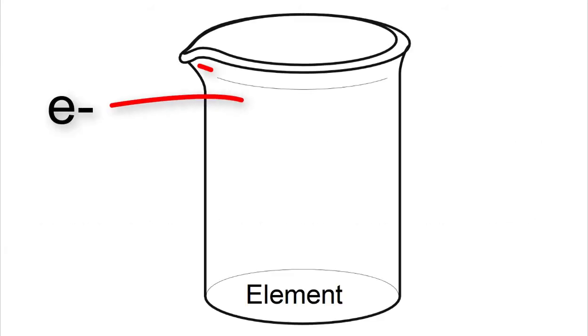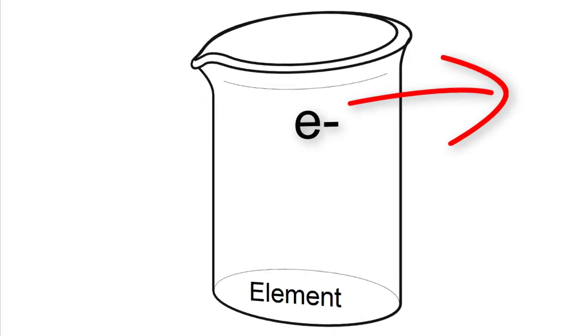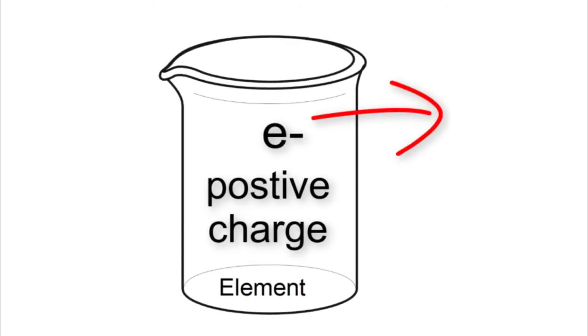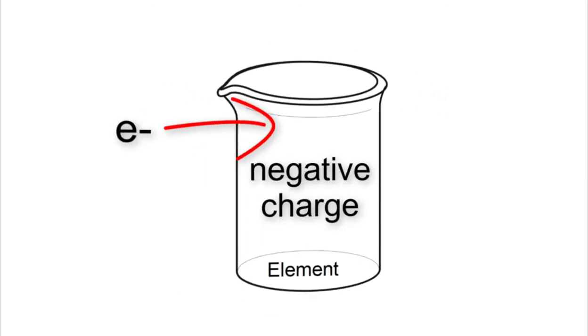Now we can discuss what an ion is. An ion is when an element either gains or loses an electron. Another way of thinking of it is an ion is when an element has a positive or negative charge.